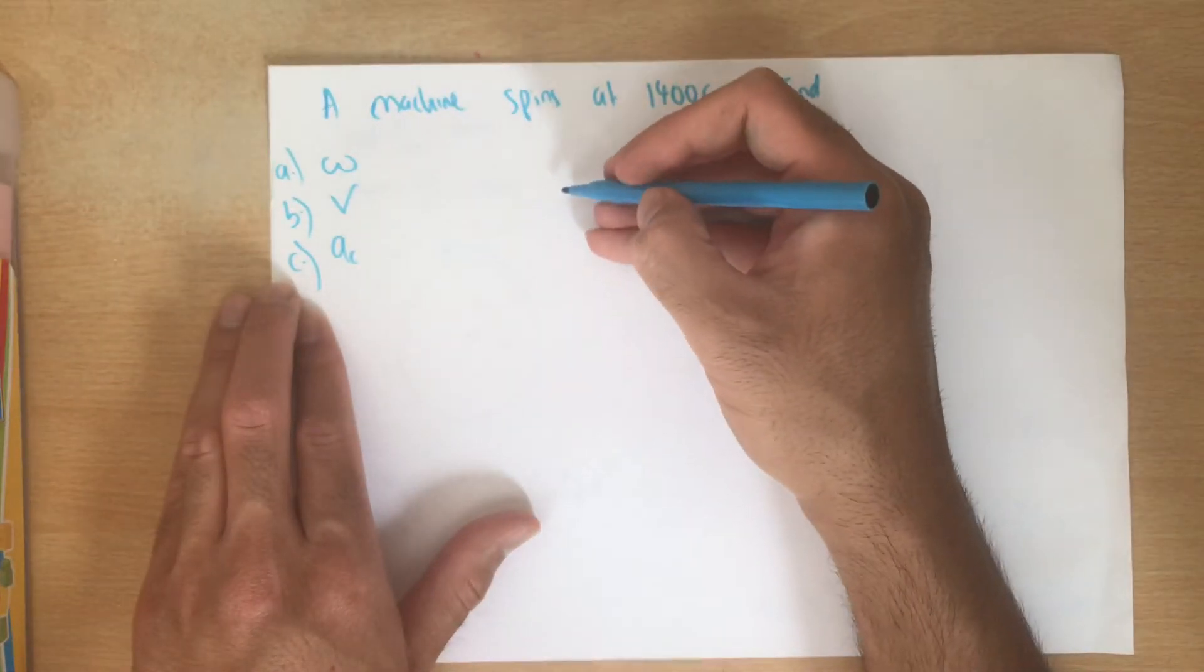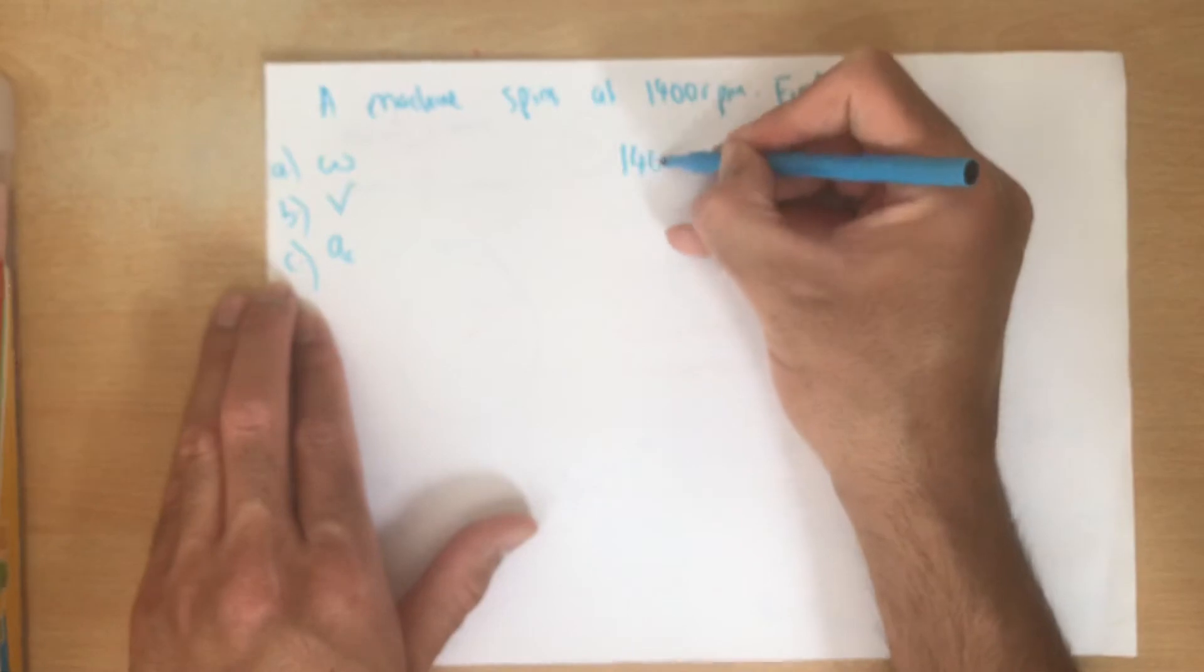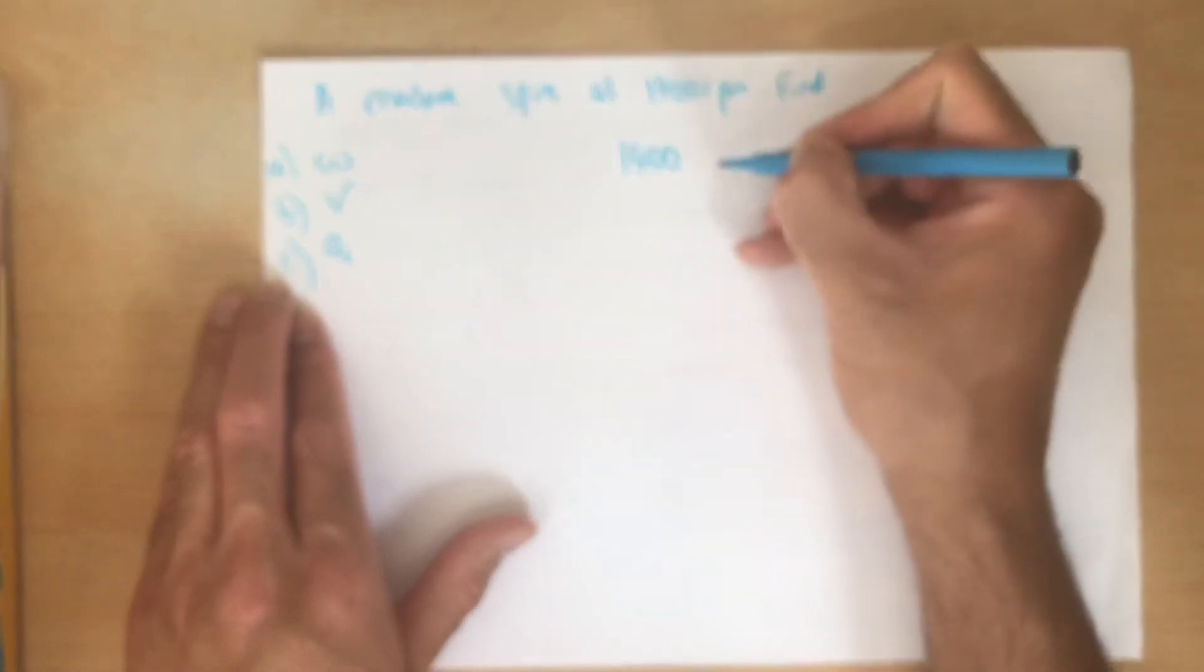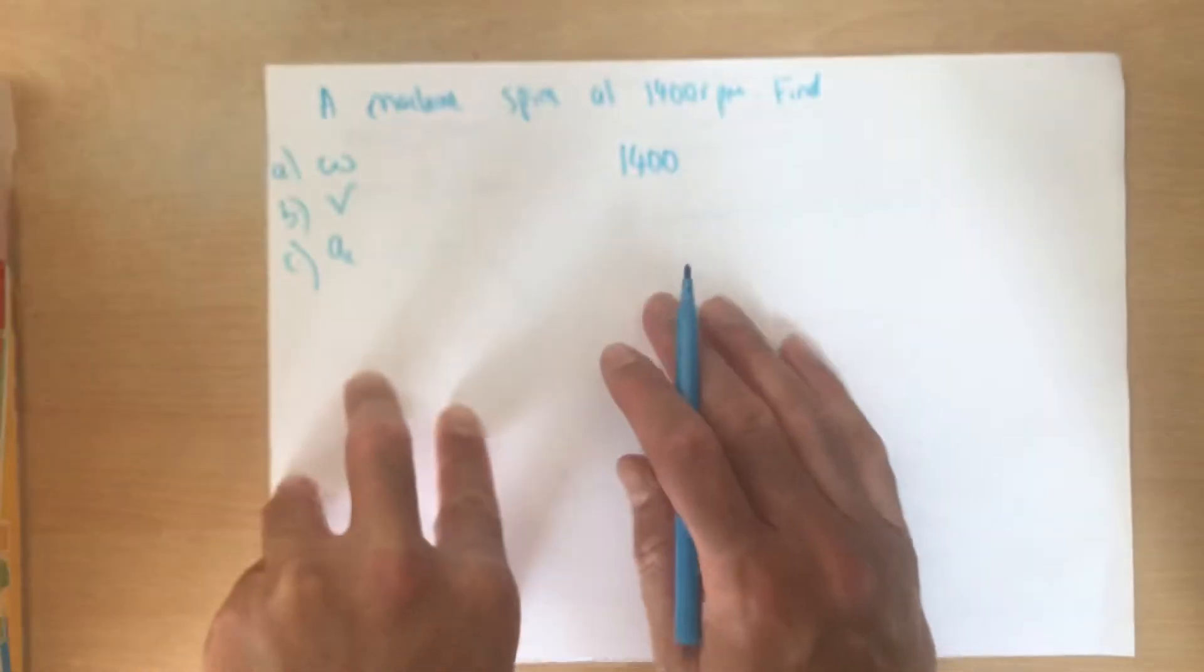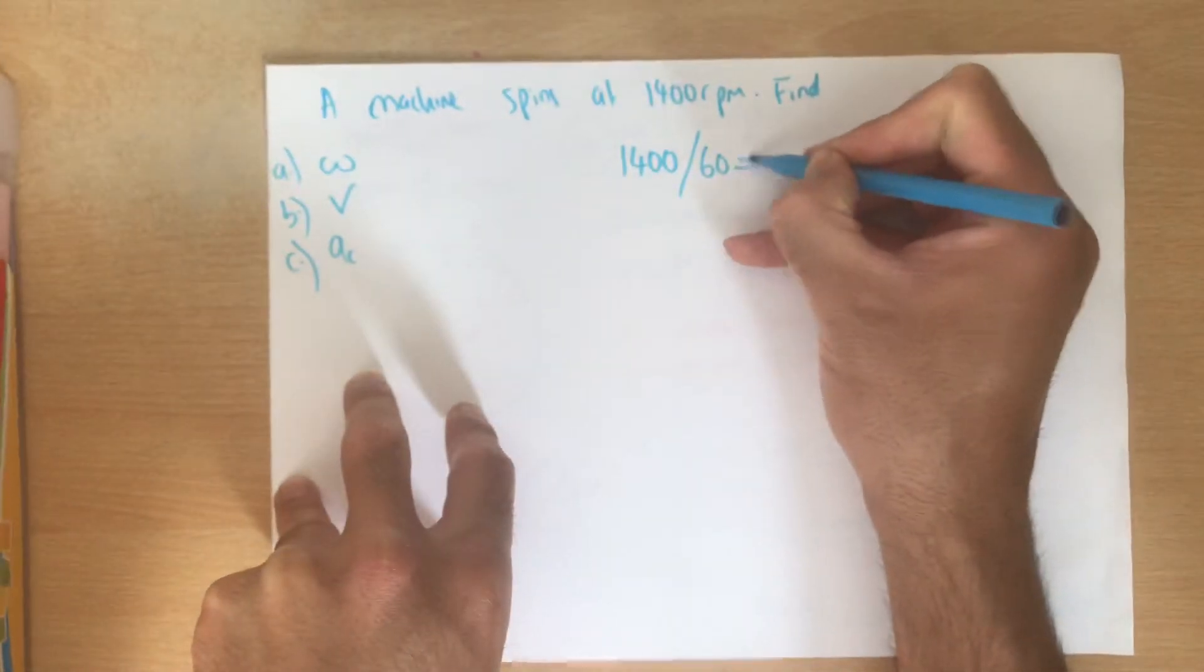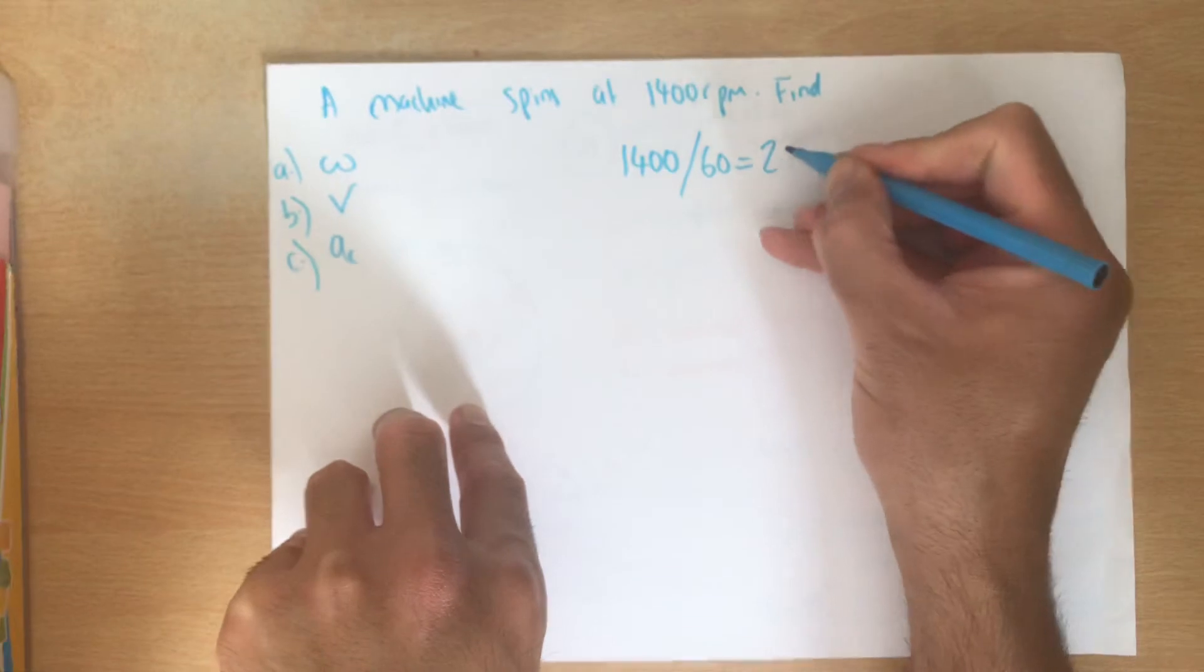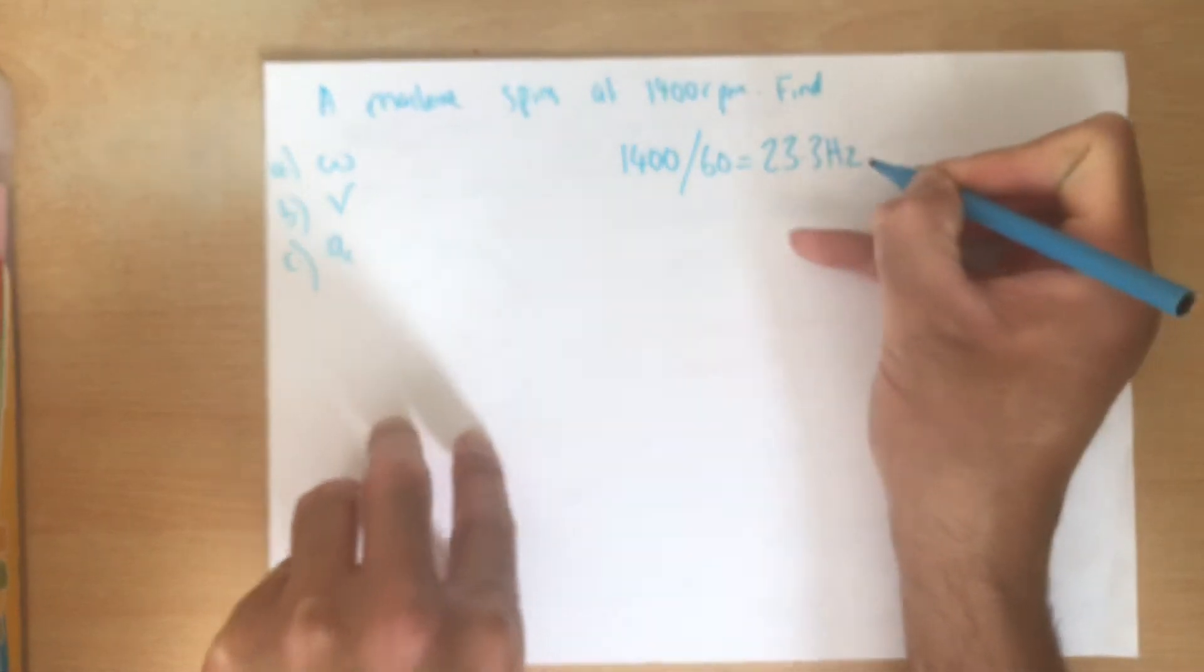What we're going to do is find the frequency of it first because it spins 1400 times per minute. So therefore in a second it's actually going to spin 60 times less. So for this one it is going to be 1400 divided by 60 and that gives me an answer of 23.3 hertz. So that's the frequency of it.